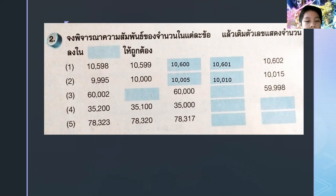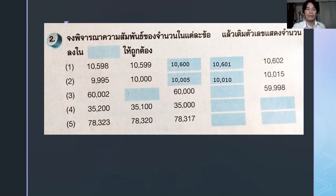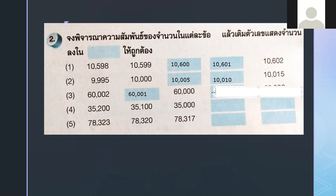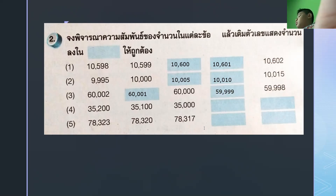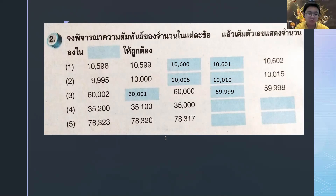For number three, is it still an increasing pattern? No. The first box should be 60,001 and the second box 59,999. The reason: the pattern is decreasing by one. Everyone say it — the pattern is decreasing by one.